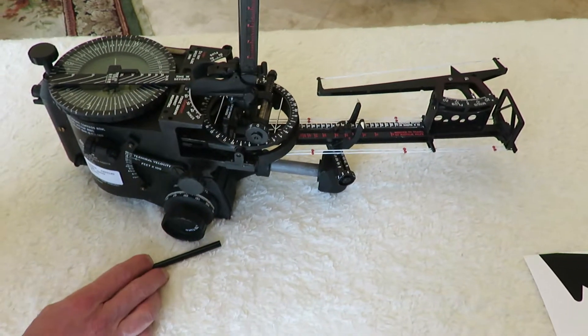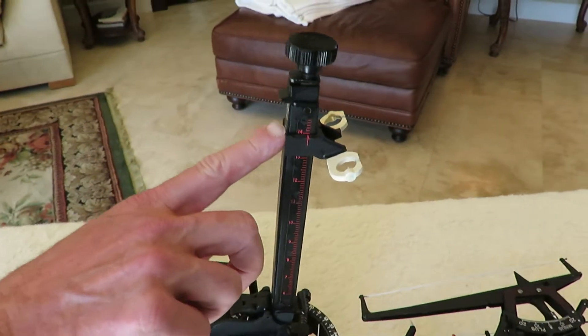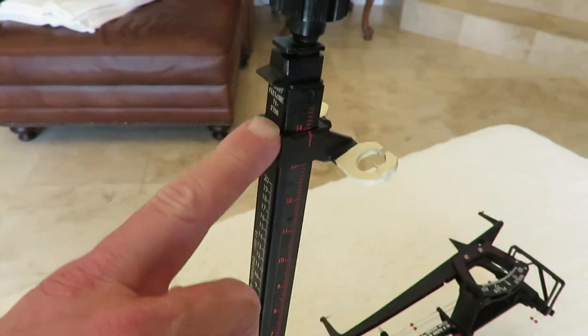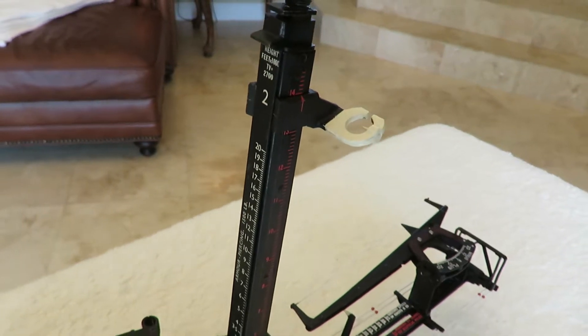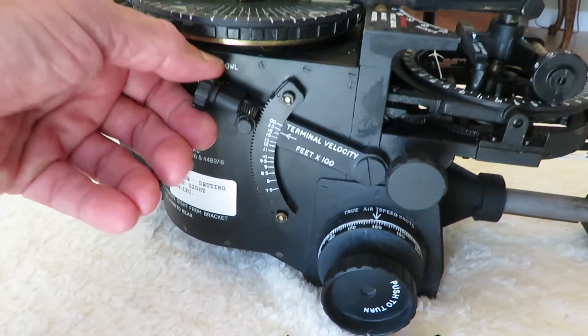We'll set the terminal velocity of the bomb, and as we can see from this scale here, the terminal velocity is 2,700, and we'll set that on the terminal velocity adjustment here.